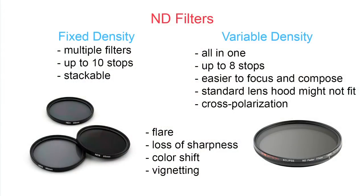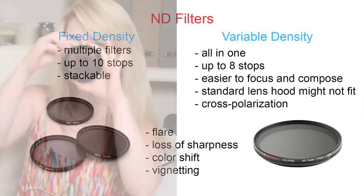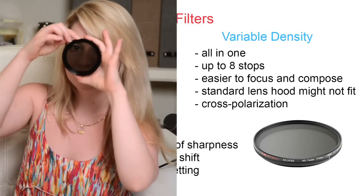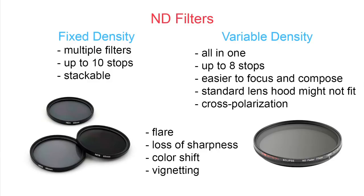There are two types of neutral density filters: filters with fixed density and filters with variable density. The main disadvantage of fixed density filters is that you might need to carry multiple filters with different densities, because depending on the situation and desired exposure you might need to cut off a different amount of light. Unlike variable density filters, which are all-in-one filters that let you change the density just by rotating them. Most variable density filters can cut off up to eight stops of light. If you need more, you'll probably need a fixed density filter, which can cut off up to 10 stops, and you can also stack them for a stronger effect.